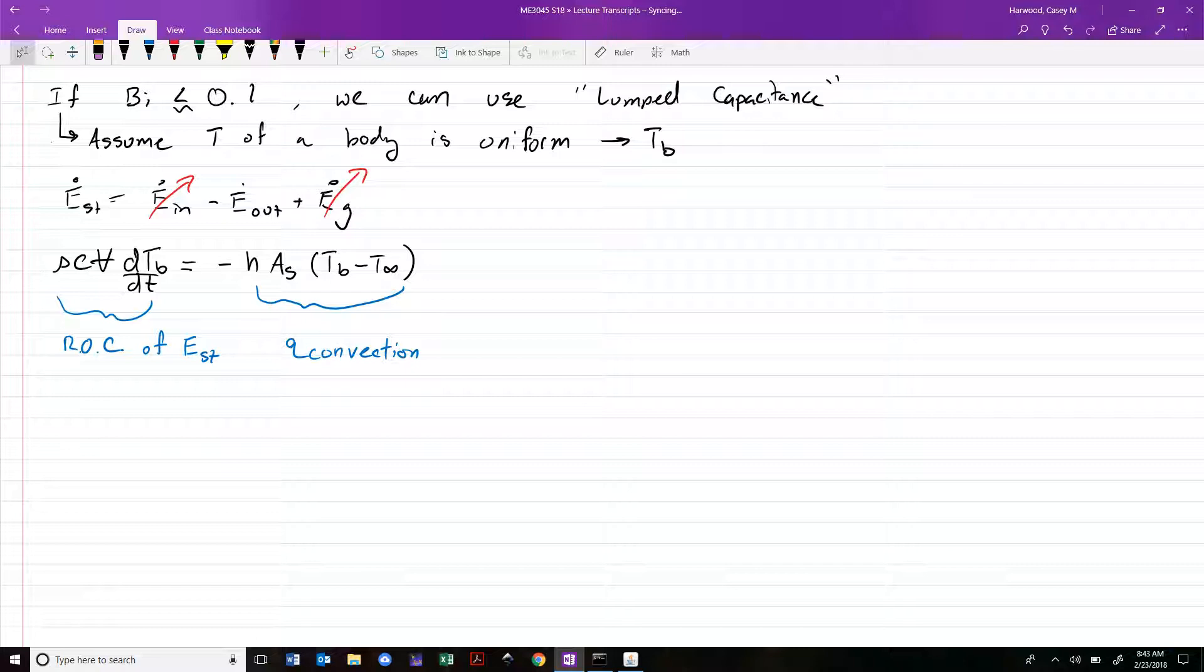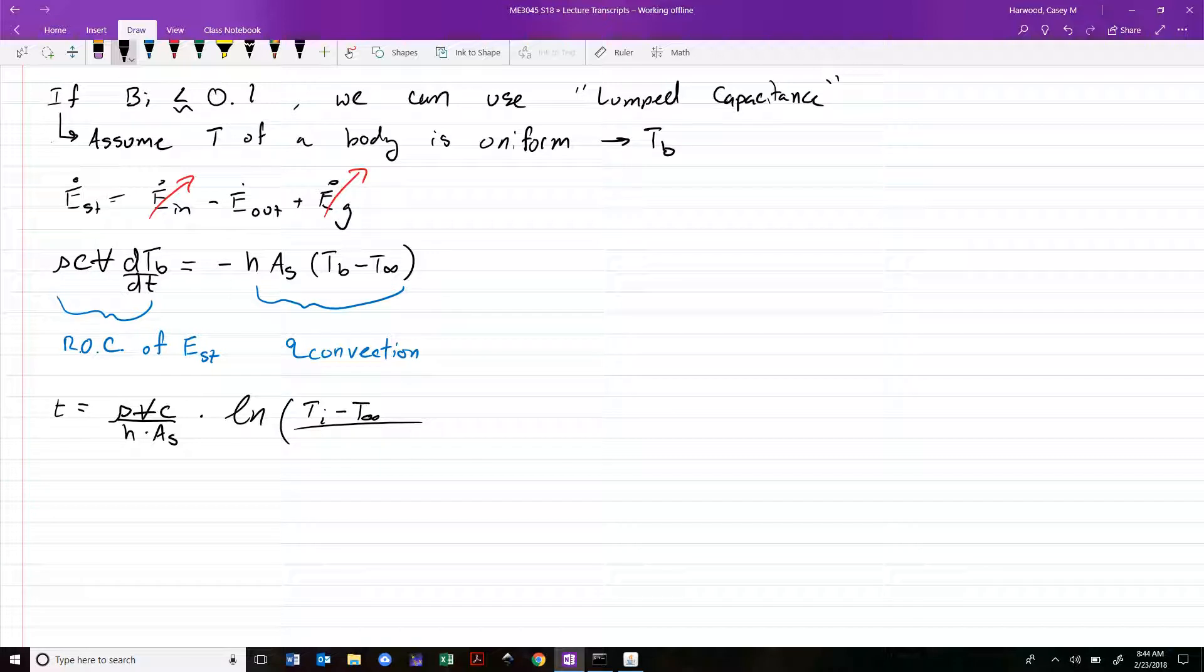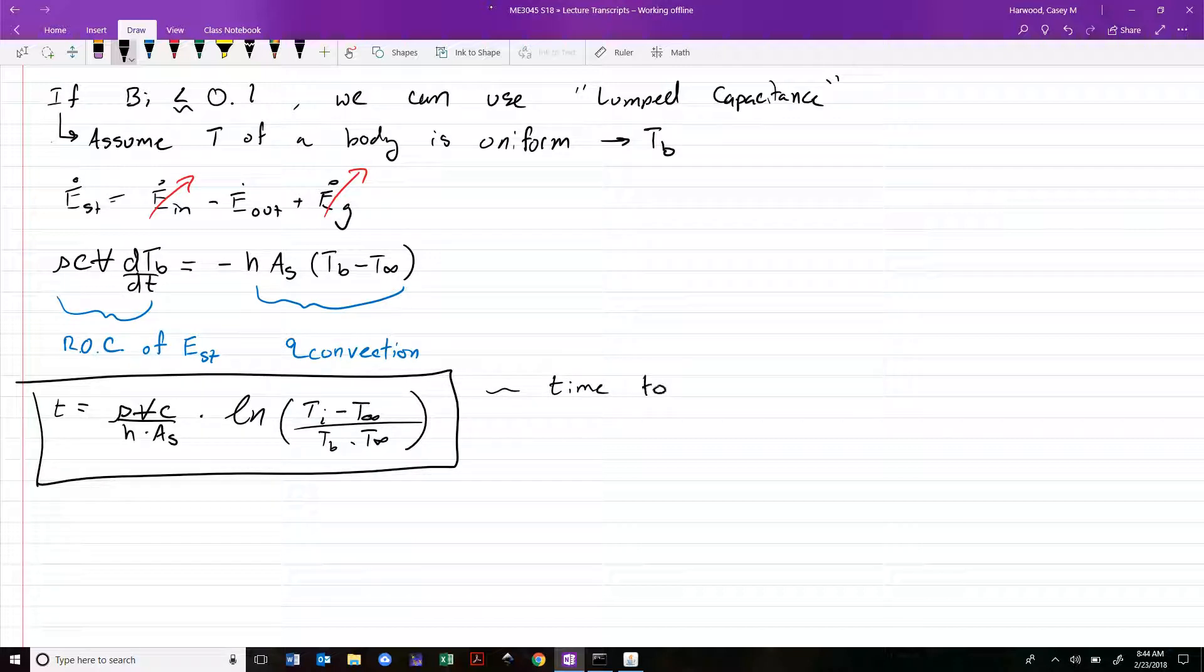The nice thing is it's a first order differential equation we can solve by separation. I won't go through the solution again, but what we ended up with was two versions. The first, form one: T equals rho V C over H times surface area times the natural log of Ti minus T infinity over T minus T infinity.